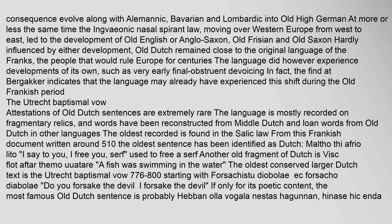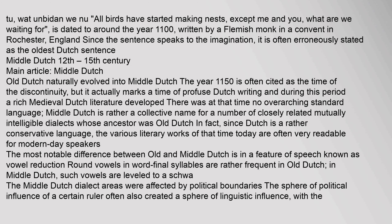The Utrecht baptismal vow starts with: 'Forsachistu diabolai — ec forsacho diabolai' (Do you forsake the devil? I forsake the devil). The most famous Old Dutch sentence, dated to around 1100 and written by a Flemish monk in a convent in Rochester, England, is: 'Hebban olla vogala nestas hagunnan, hinase hic enda thu, wat unbidan we nu?' — meaning 'All birds have started making nests, except me and you, what are we waiting for?' Since this sentence speaks to the imagination, it is often erroneously stated as the oldest Dutch sentence.